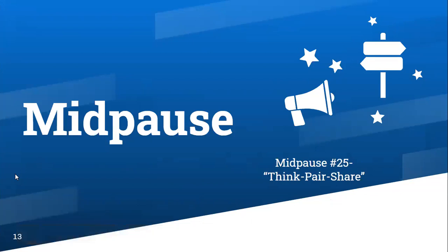We'll jump right in to a mid-pause. This mid-pause is modeled after mid-pause number 25 in the Hitting Pause book — think, pair, share. To move this to a web broadcast, we are going to use the breakout rooms in Zoom to provide an opportunity for you all to discuss a prompt and reflect on the presentation to date. I'm going to initiate the breakout rooms, randomly assign everyone into four rooms. You'll have five minutes to discuss the prompt: How do you think you'd be able to integrate a starting pause into your class?